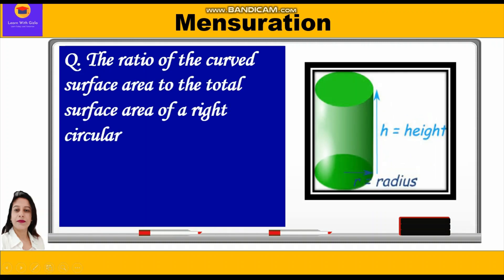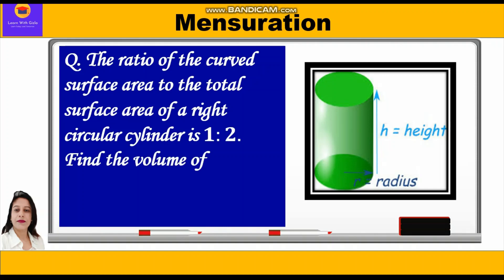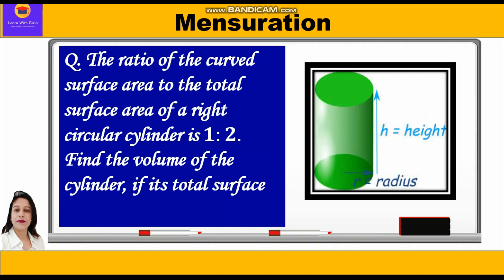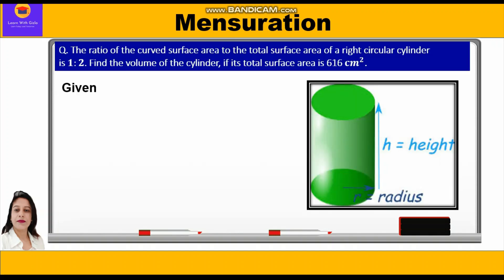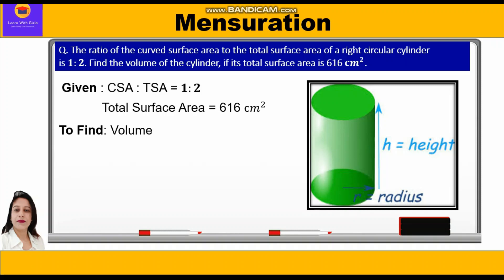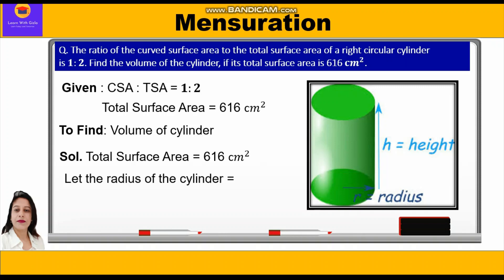The ratio of the curved surface area to the total surface area of a right circular cylinder is 1:2. Find the volume of the cylinder if its total surface area is 616 cm². Given: ratio of curved surface area to total surface area is 1:2, and total surface area is 616 cm². We have to find the volume of the cylinder.